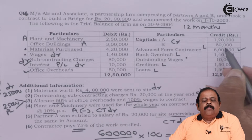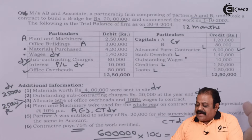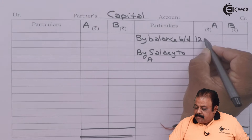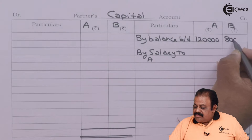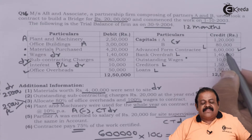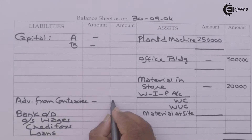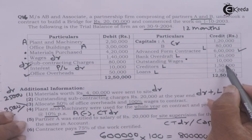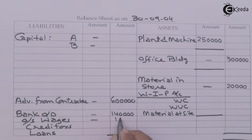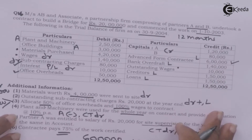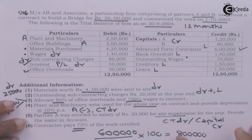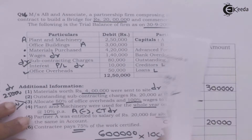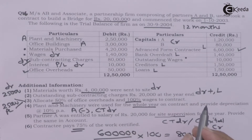Capital of A and B: opening balance of A is 1,20,000 and B is 80,000 — credited to their respective capital accounts. Advance from contractee of 6 lakhs will be recorded on the liability side; alternatively this amount can be deducted from work in progress on the asset side. Bank overdraft of 1,40,000 is a liability. Outstanding wages of 10,000 from the trial balance go directly to the liability side — this will not be added again to wages in the contract account. Creditors 1,50,000 and loans 1,50,000 are also recorded.